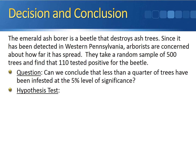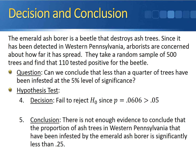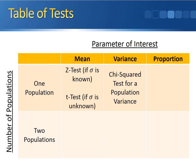Finally, we come to our decision and conclusion. Our decision is to fail to reject the null hypothesis because the p-value of 0.0606 is greater than 0.05. This means there is not enough evidence to conclude that the proportion of ash trees in western Pennsylvania infested by the emerald ash borer is significantly less than 0.25. Going back to our table of tests, the one-sample proportion test is a hypothesis test dealing with a single population where the unknown parameter of interest is the population proportion.